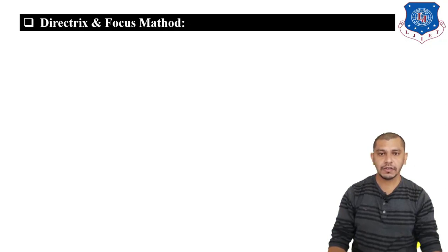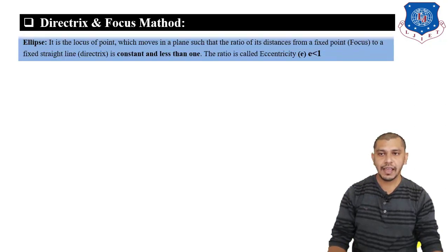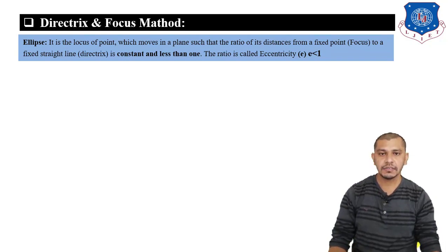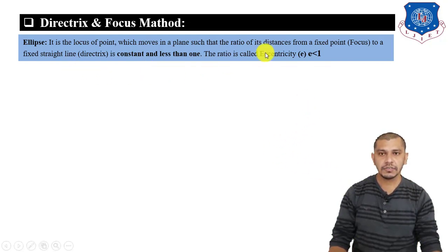But before moving on to the method, let us discuss the definition of ellipse, parabola, and hyperbola in terms of a fixed straight line and a fixed point known as the focus point. An ellipse is a locus of a point moving in a plane such that the ratio of its distances from the fixed point to a fixed straight line will remain constant and less than 1. This ratio is known as the eccentricity ratio.